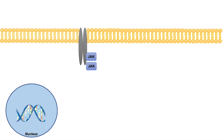Hey everyone, this lesson is on regulation of the JAK-STAT pathway. We're going to be focusing specifically on how the pathway is regulated. We've talked about the JAK-STAT pathway before. It can be activated by several extracellular ligands such as GM-CSF, and also by cytokines like erythropoietin, prolactin, thrombopoietin, and leptin.